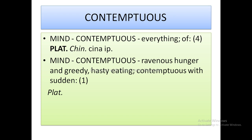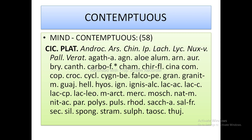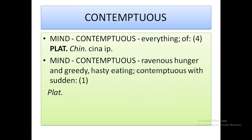The next sub-rubric is mind: contemptuous with ravenous hunger and greedy, hasty eating. In conclusion, for contemptuous you can remember Platina and Palladium — these are very important remedies. Thank you. If you are liking this series of rubric perceiving, please share it.